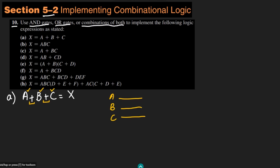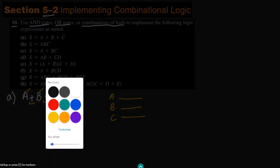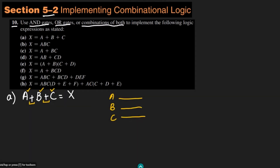So this is the OR gate, and the inputs to it are a, b, and c. Let me connect them all to the OR gate. The output of it is x, which equals a + b + c. This is the output circuit for part A.